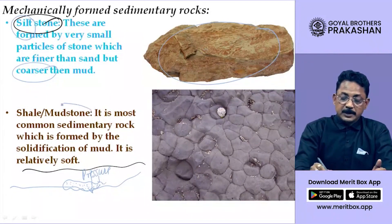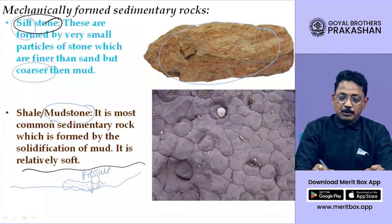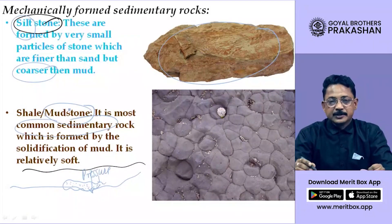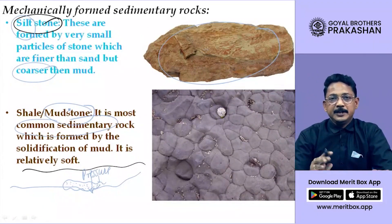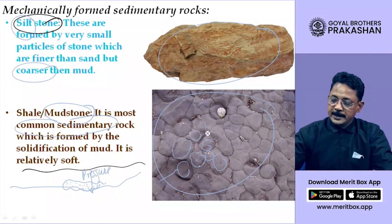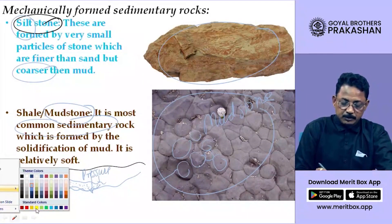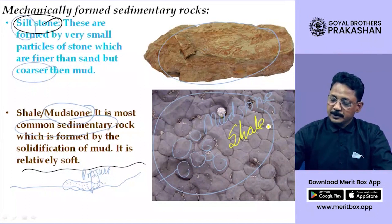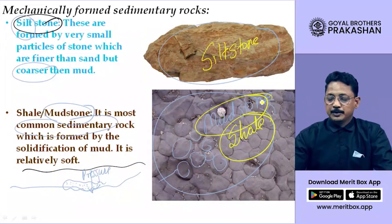Mudstone — the most common type of sedimentary rock, ultimately formed by the solidification of mud over millions of years. The mud gets stuck to one another and the rock formed is called mudstone. Another name given to mudstone is shale — you can call it either shale or mudstone. Siltstone is formed from silt; mudstone is formed from mud.